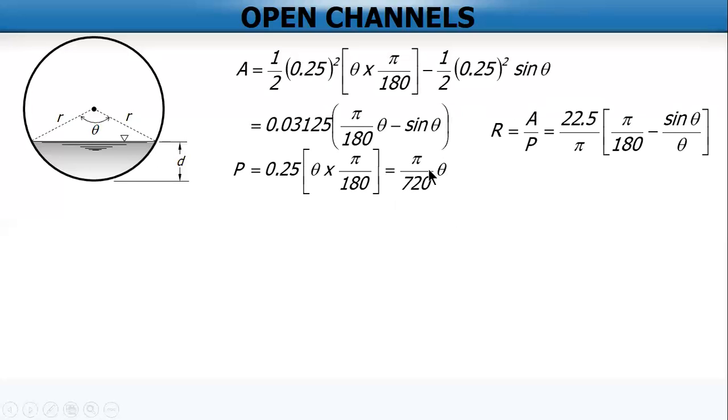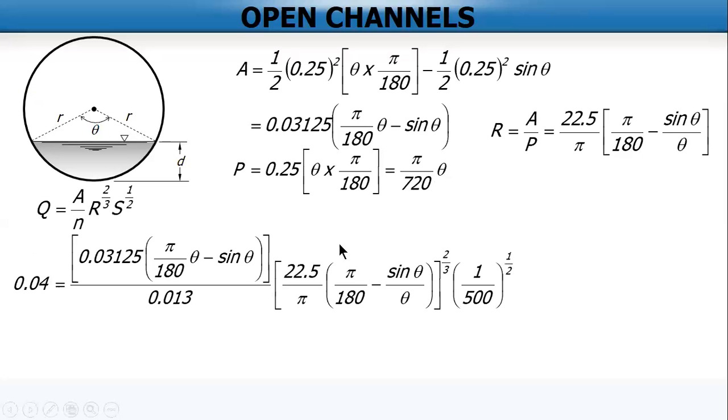So R equals area divided by P. 0.03125 divided by pi over 720 is 22.5 over pi. And then divide the inside of the parenthesis by theta: this term divided by theta pi over 180, and then sine theta over theta. This is R. Now substitute this into Manning's formula: Q equal to area over N, R raised to 2 thirds and S raised to 1 half, with Q equal to 0.04. So this is the equation. The unknown is only theta.